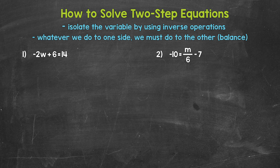Let's jump into number one where we have negative 2w plus 6 equals 14 — so negative 2 times what plus 6 equals 14. We need to isolate the variable w by using inverse operations, and we will go in the reverse order of operations. So we need to undo the addition first.